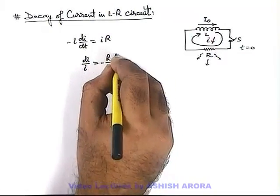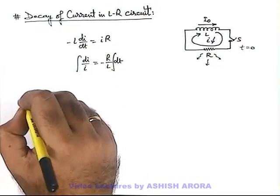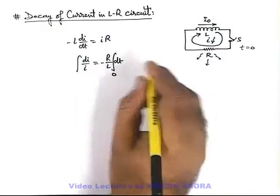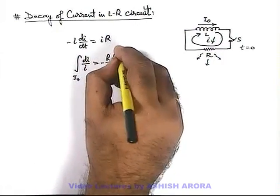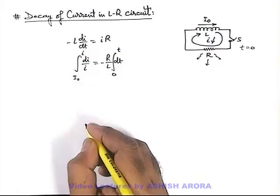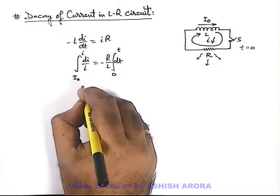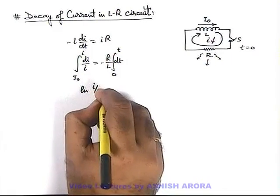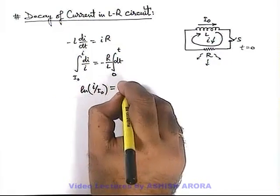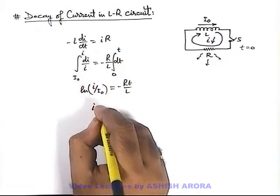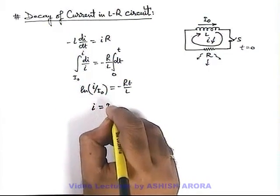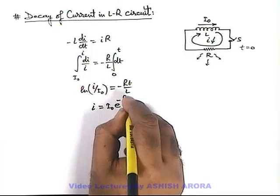If we integrate this expression, at t = 0 when the switch was closed, the current flowing through the inductor was i₀, and at any general time t, the current is i. Integrating, we get ln(i/i₀) = -Rt/L. On simplifying, we get the current in the circuit is i = i₀e^(-Rt/L).